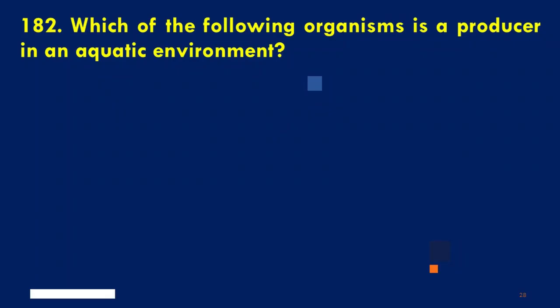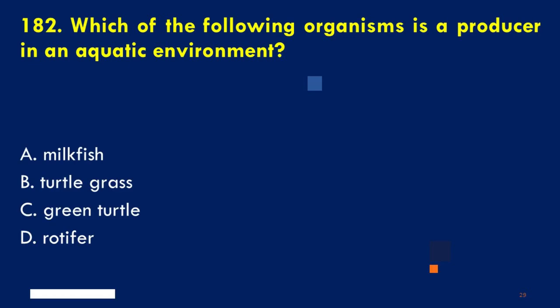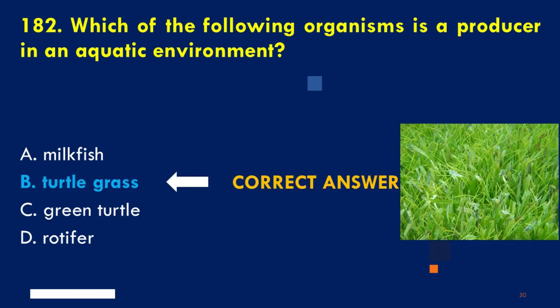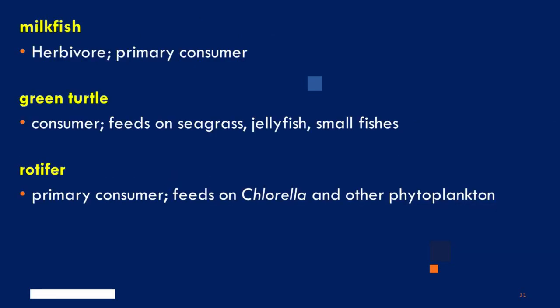Which of the following organisms is a producer in an aquatic environment? A. Milkfish, B. Turtlegrass. Turtlegrass is the correct answer as a producer. Milkfish is a primary consumer, particularly a herbivorous species. The green turtle is also a consumer, feeding on seagrass, jellyfish, and small fishes. Rotifer is a zooplankton which is a primary consumer; they feed on Chlorella and other phytoplankton.